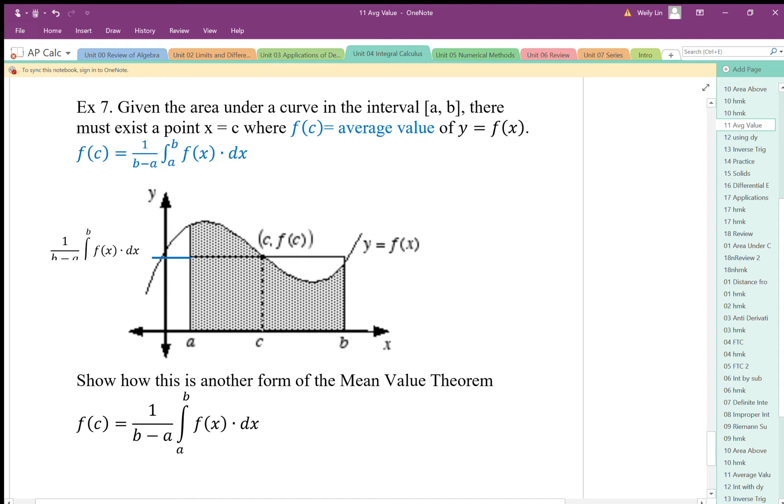And we can say that the average value must happen in the interval between a and b. I'm going to say the average value must happen at some point c where c is in between a and b. So it exists somewhere in there. We don't exactly know where it is. We're not going to actually try to find it either, but we're just going to say it exists.